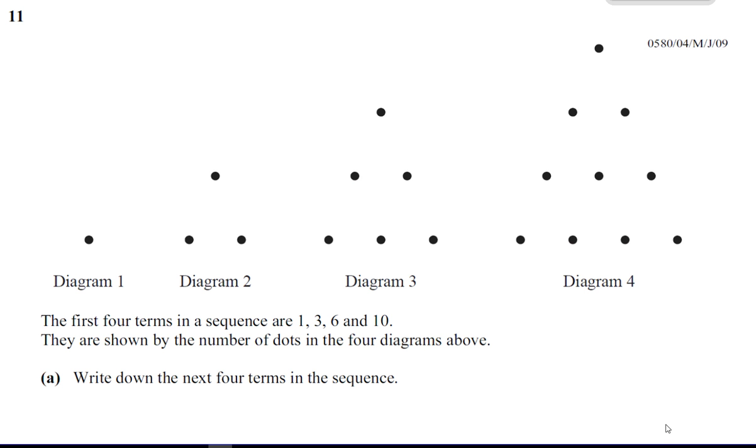Okay, so the first four terms of a sequence are 1, 3, 6, and 10. They are shown by the number of dots in the four diagrams above. We have diagrams with some dots on them showing the pattern.